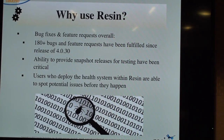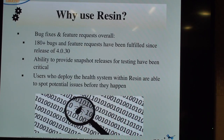A final point on why to use Resin: our bug fixes and feature requests. Currently in our bug tracker, we have about 14 open bugs — four are feature requests and ten are open issues. The rate at which we fix bugs and provide insight for clients who run on Resin is something people really value.